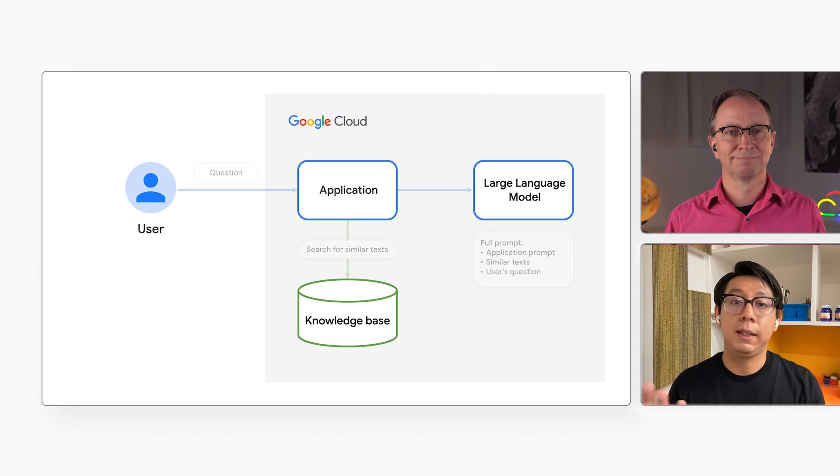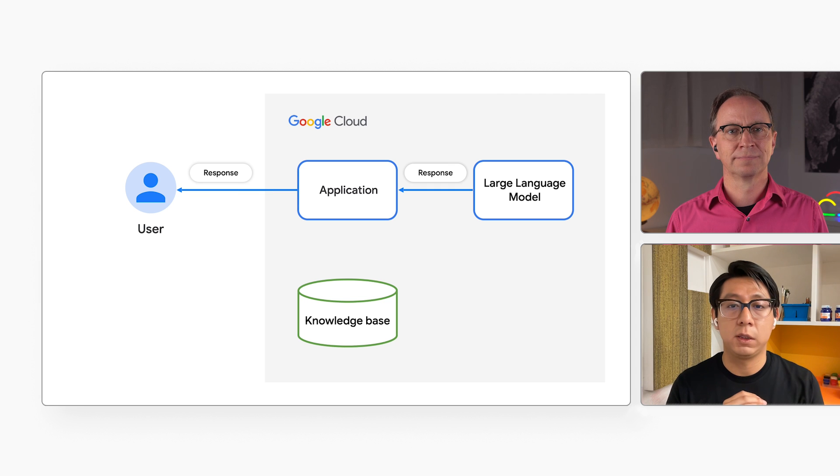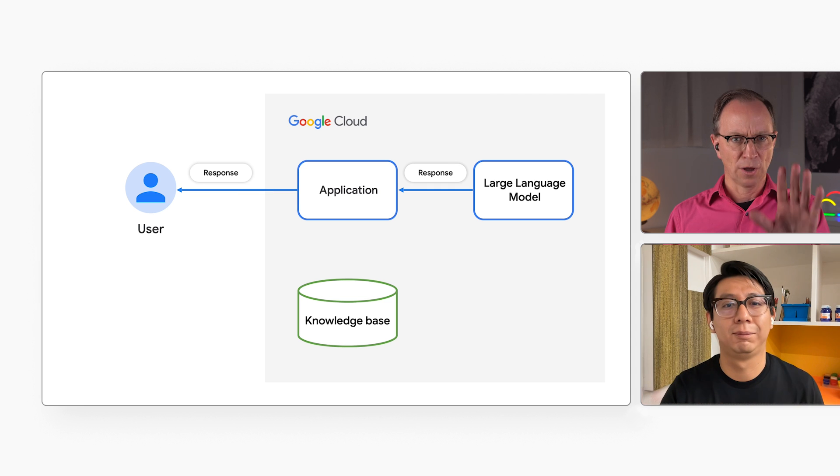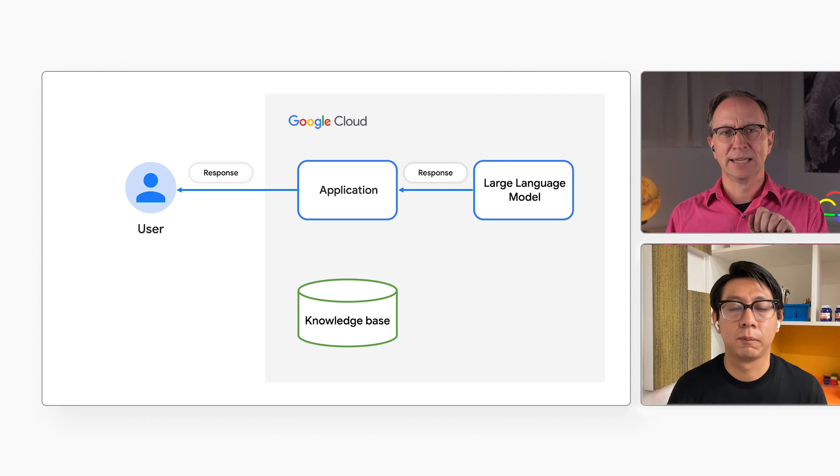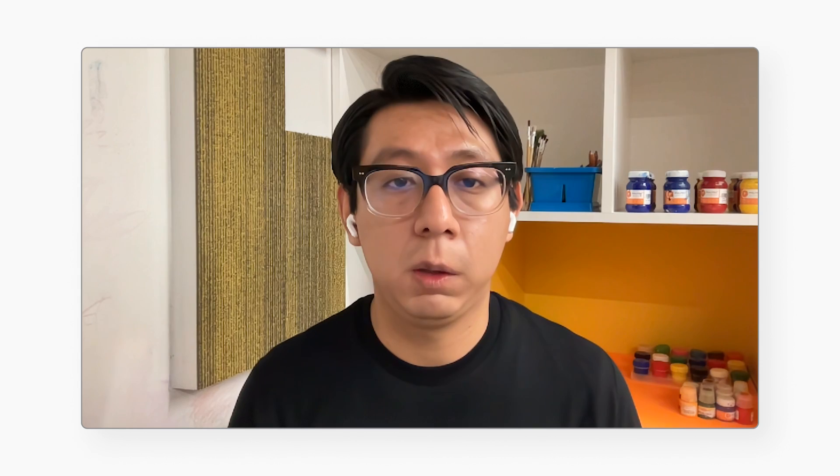Then the LLM will compose a reply based on the prompt, and the web app will return that answer to the user. I think I get it. How do we build it? We will need to build two things. First, we will build a job that indexes the data — in this case, the Cloud Run release notes. Second, we will build a web application that can answer users' questions, using the index created by the job in the first step.